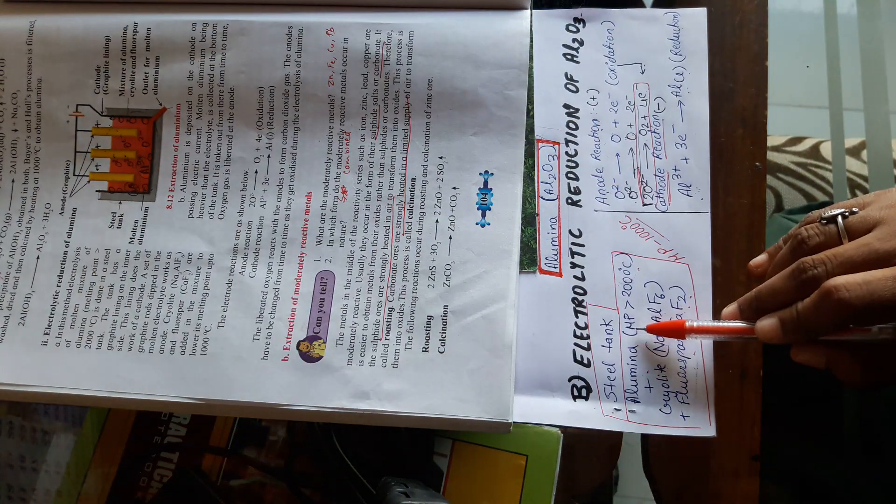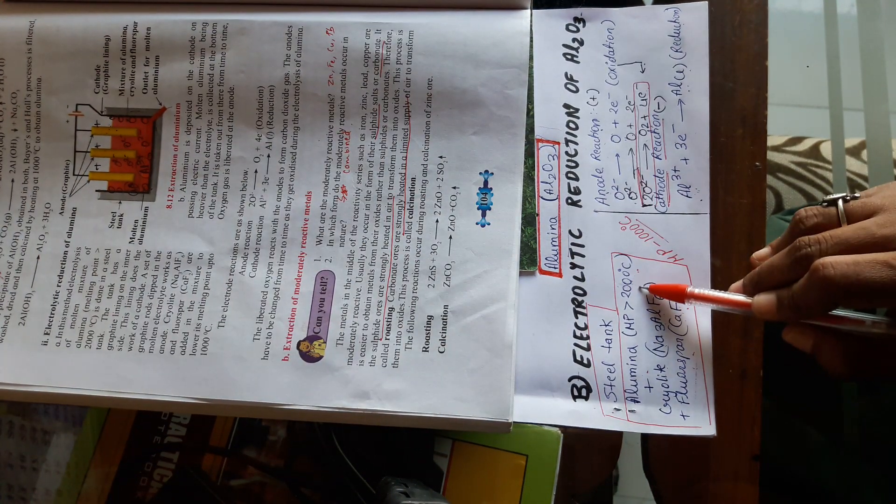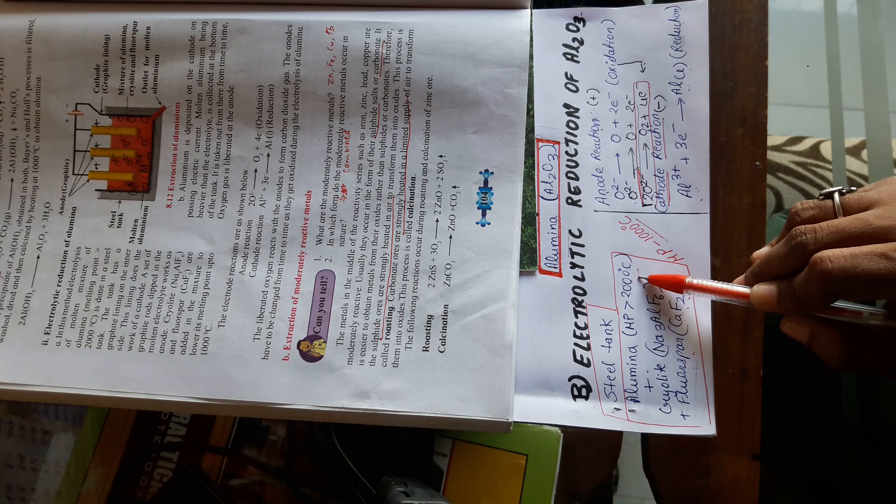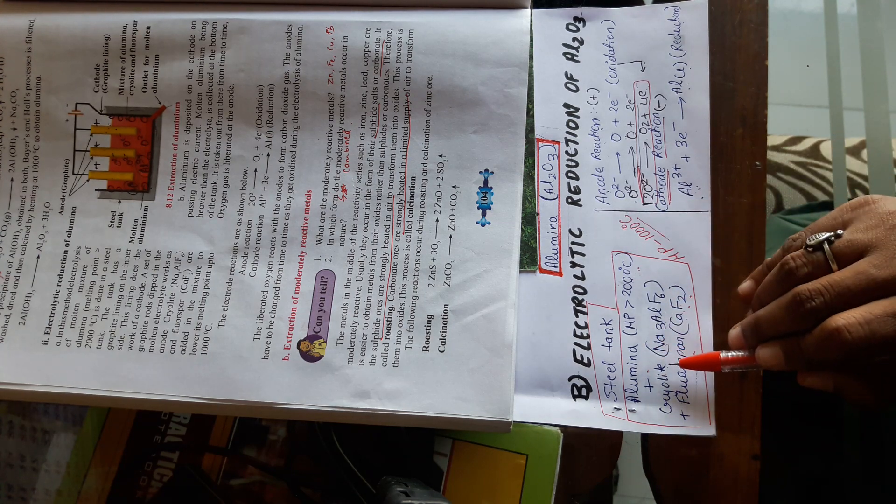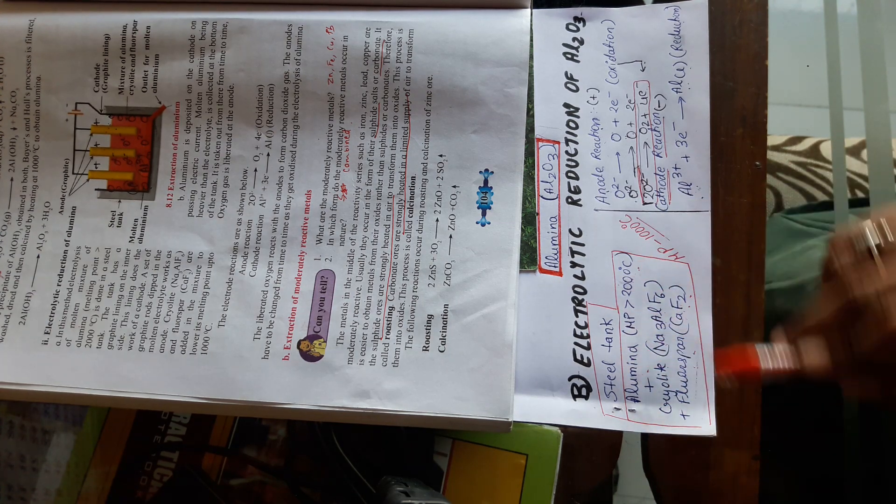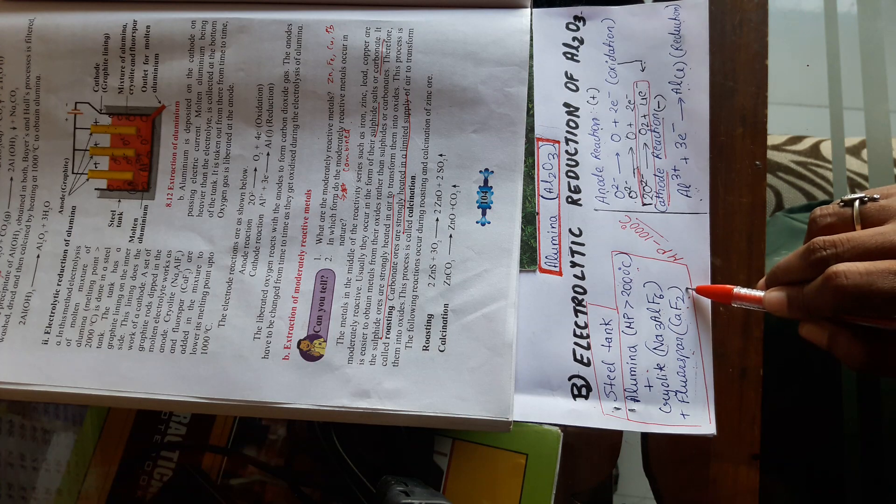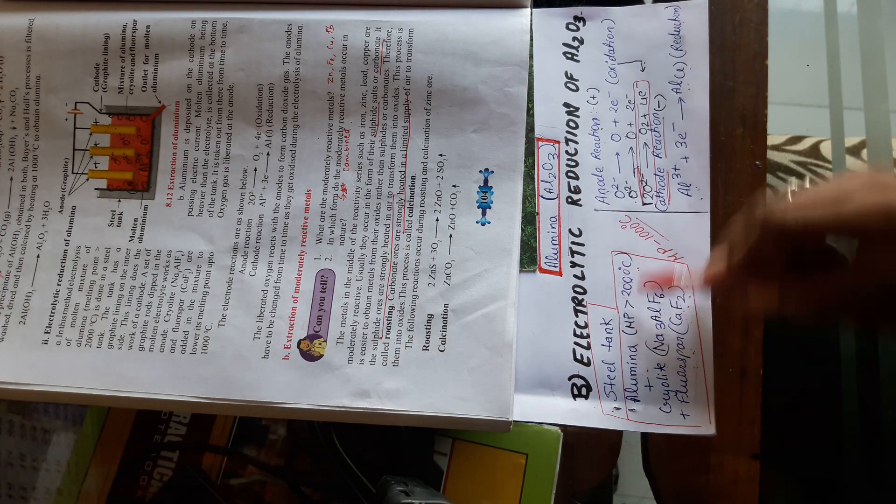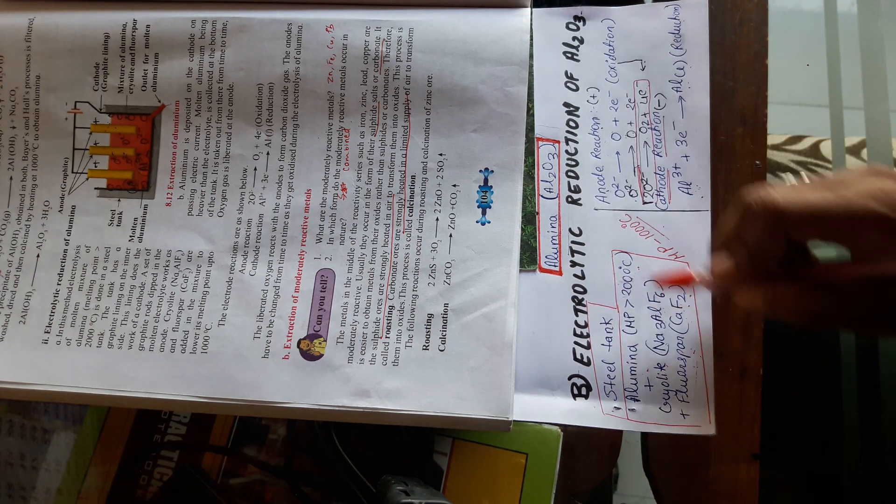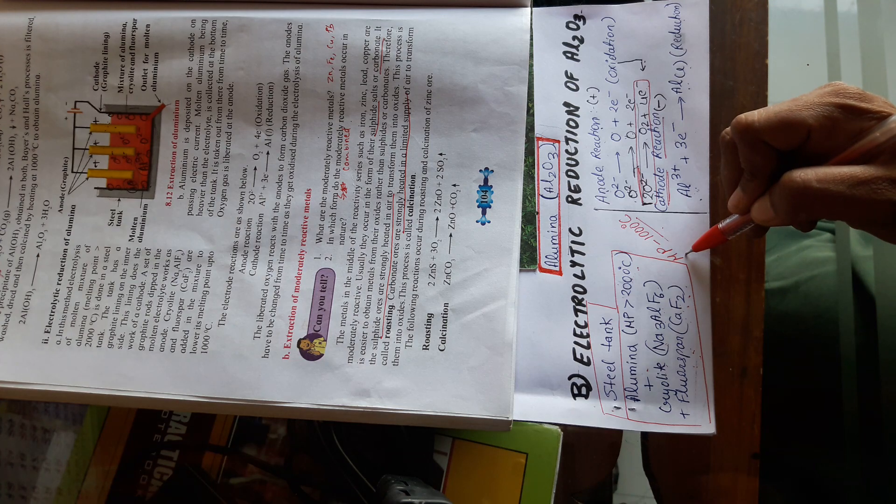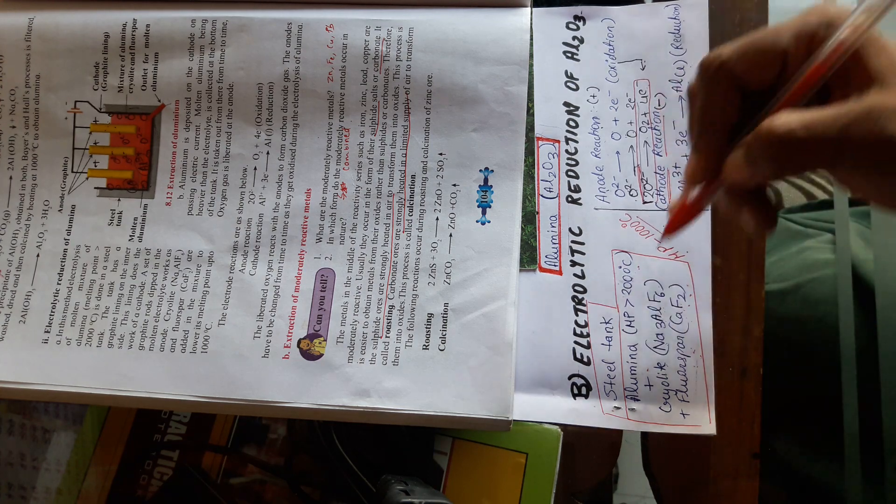But the melting point of alumina is more than 2000 degrees Celsius, and at this high temperature electrolysis cannot be done. So to reduce the melting point of alumina, cryolite and fluorospar, that is sodium aluminium fluoride and calcium fluoride, is added. The mixture has melting point 1000 degrees Celsius, and at this temperature electrolysis can be done.